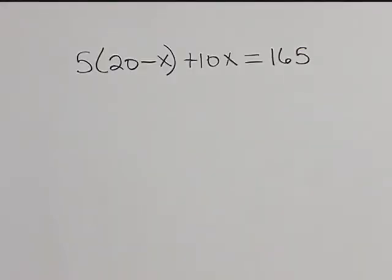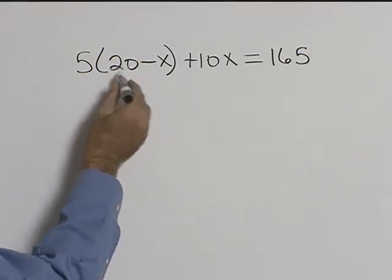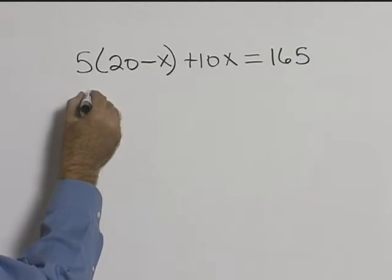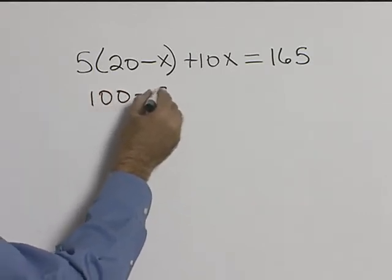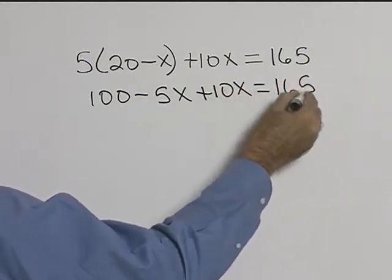Let's solve 5 times the quantity 20 minus x plus 10x equals 165. So let's clear our parentheses. If we distribute 5, 5 times 20 will be 100 minus 5x plus 10x is equal to 165.